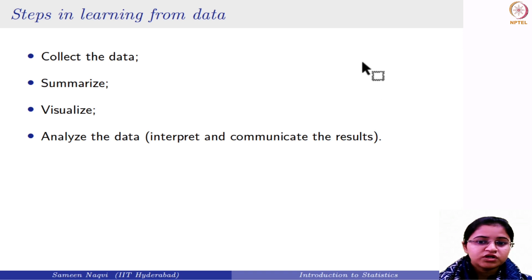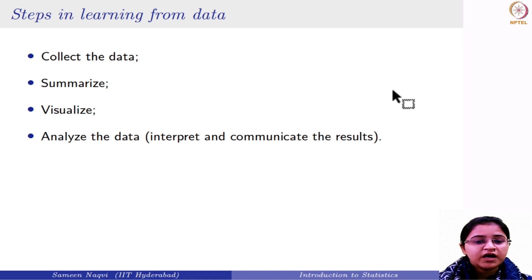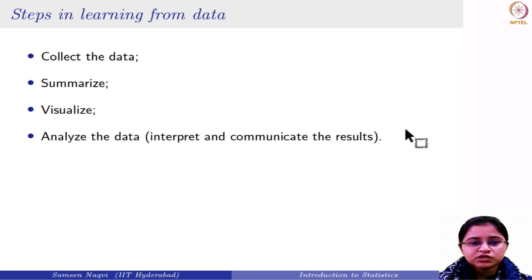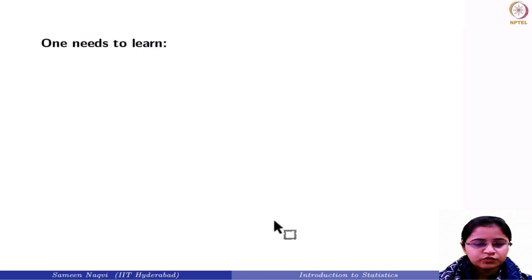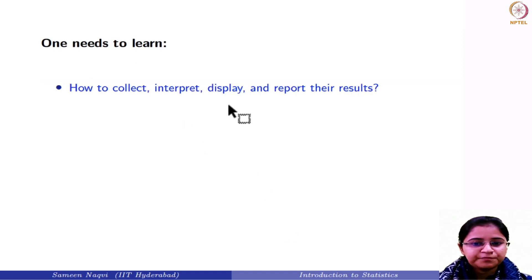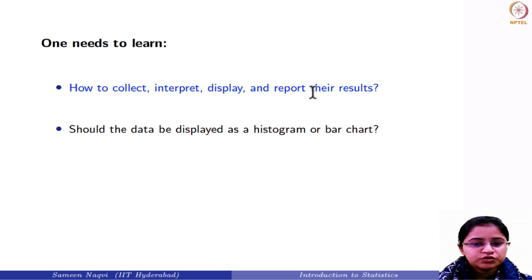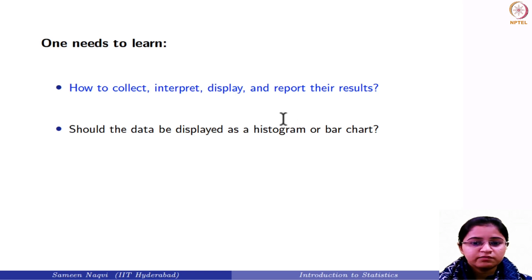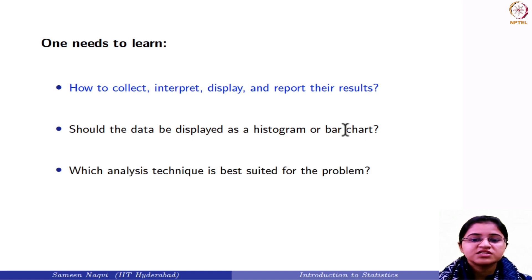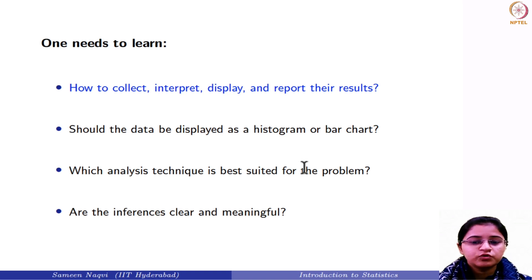Even if one of the steps goes wrong, your analysis will be affected. It is not always the final analysis that matters — the first three steps play an equally important role. If you do not collect the data properly, your summary measures will be incorrect. If you apply the wrong summary measure or visualize it in the wrong way, your analysis will also be impacted. Should the data be displayed as a histogram or a bar chart? These two are different and depend upon the variable type, so you should be able to distinguish between different visualization tools. Similarly, you must apply the correct analysis technique best suited for your problem.